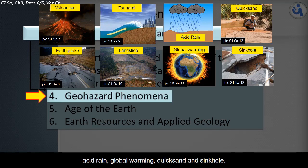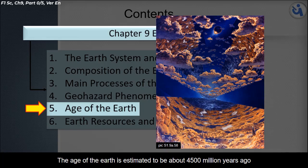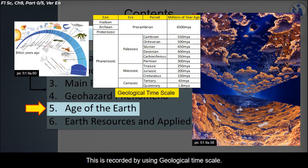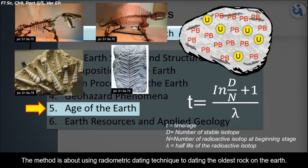Topic five is age of the Earth. The age of the Earth is estimated to be about 4,500 million years. We will see the method to record historical events since the beginning of the Earth using the geological time scale, and discuss radiometric dating technique used to date the oldest rocks on Earth.